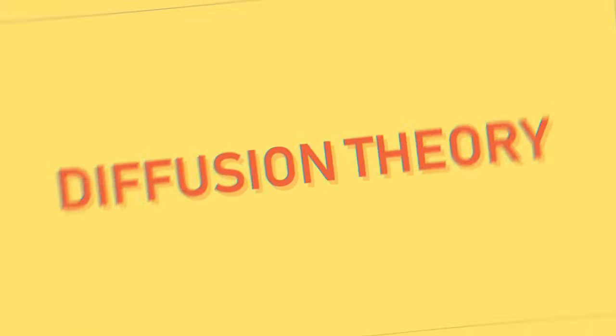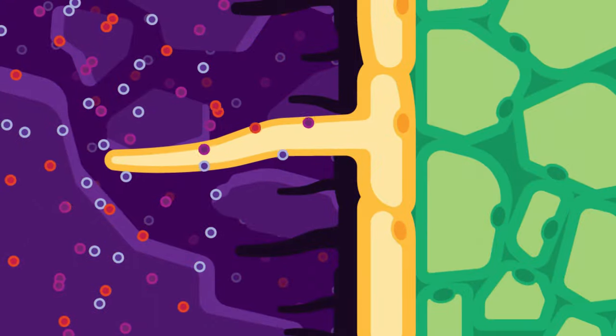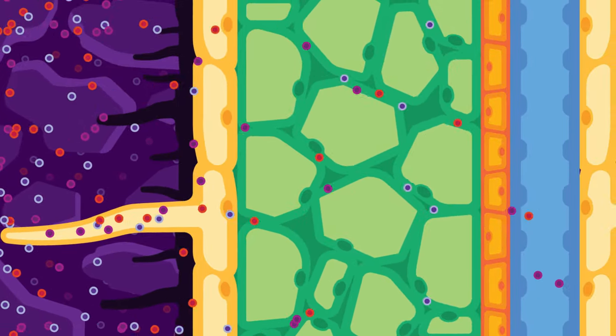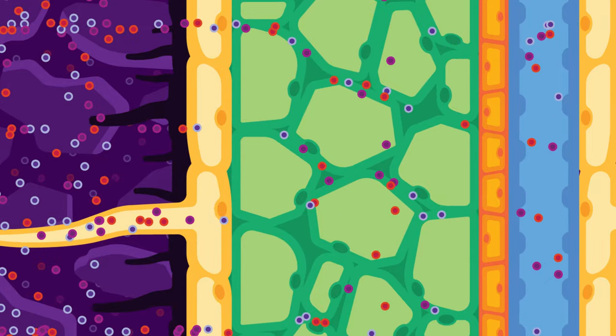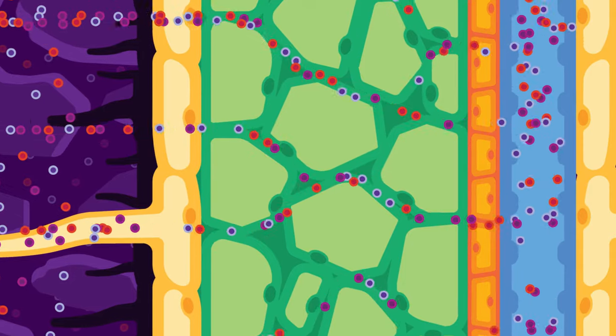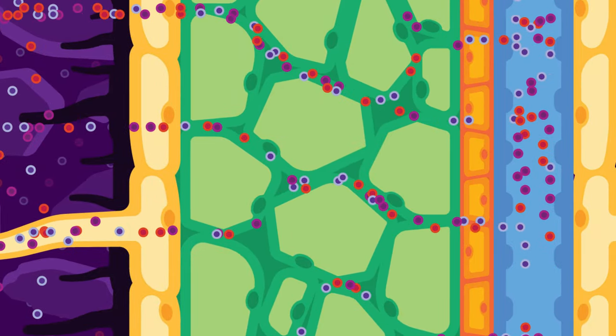Diffusion theory: When the concentration of mineral ions is higher in the external soil solution than the root, then the ions in the soil solution will move from a region of higher concentration, in this case the soil solution, to a region of lower concentration, that is the roots.